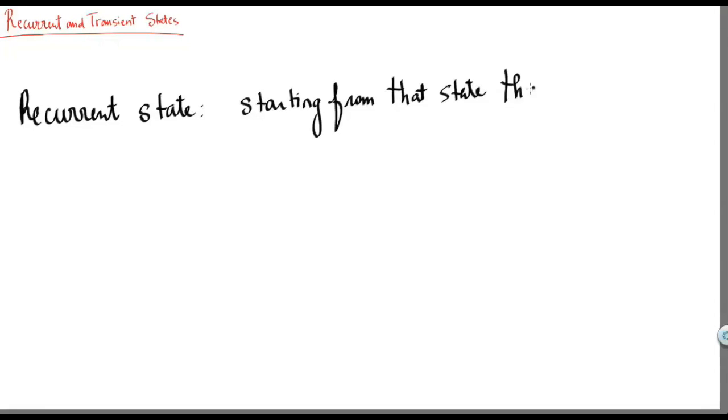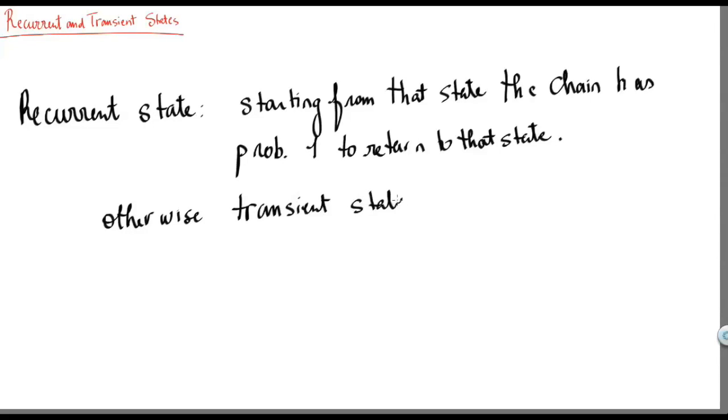A state is said to be recurrent if, starting from that state, a Markov chain is guaranteed to revisit that state again. In this sense, a transient state would be otherwise.